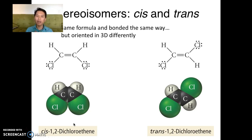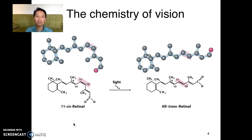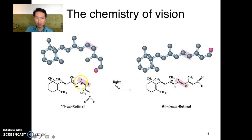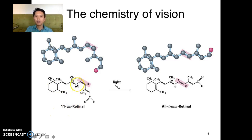This is a very small difference between two molecules, but nature uses this difference in very important ways. One example is in the chemistry of vision. There is a protein in our eye called retinal, and it is in a cis conformation. When light hits your eye, that bond breaks and re-forms as the trans conformation. Looking at this bond, there are hydrogens — if those hydrogens are on the same face, that's cis; if on opposite faces, that's trans.